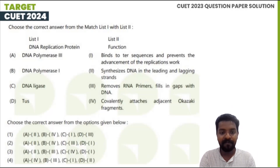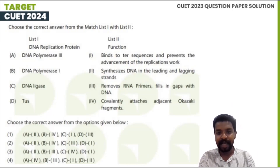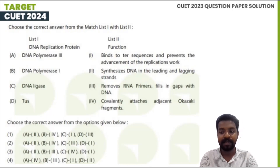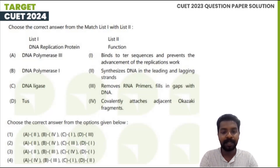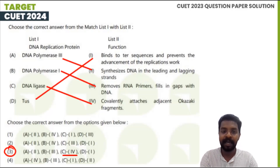So for the matching: DNA polymerase 1 removes RNA primers and fills gaps — that is option C, matched as 4-1. DNA ligase joins fragments. TUS is matched 1-1. DNA polymerase 3 is matched as option 3, synthesizing the leading and lagging strand. The correct answer is option 3.